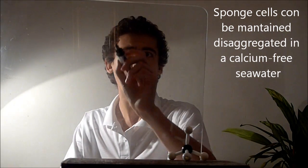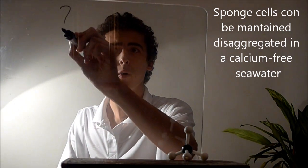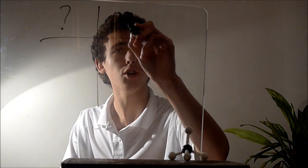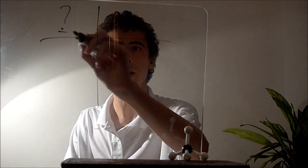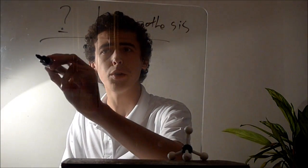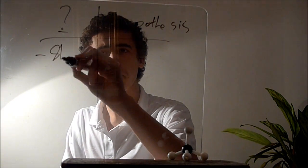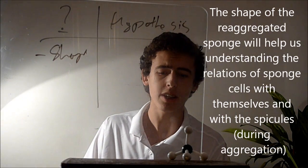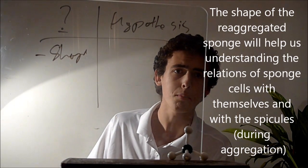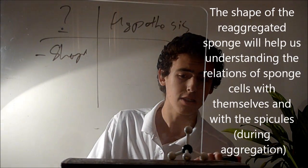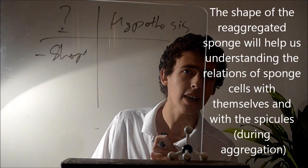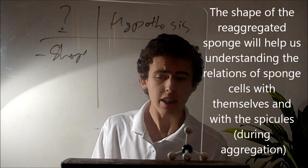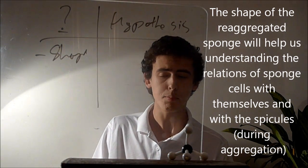So what results could we have, and what questions could be answered that cannot be answered on Earth? First of all, what will be the shape? The shape is going to help us understand the relationship between the cells themselves in the moment of aggregation, and also the spicules.